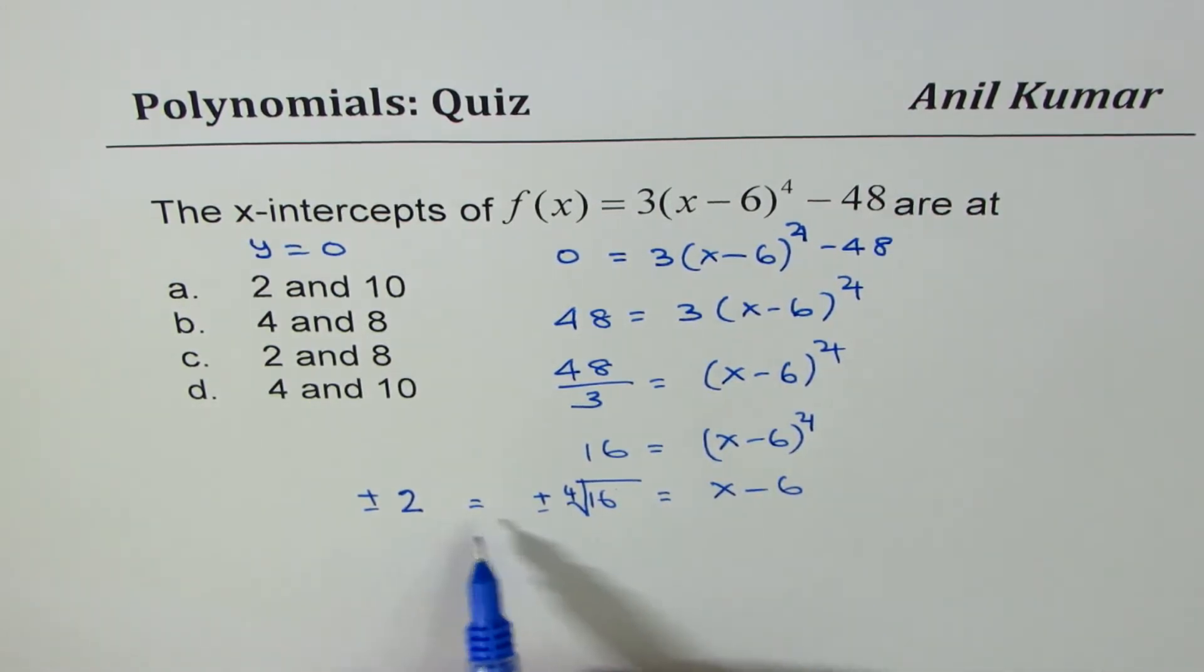Perfect. So don't write square root. Otherwise you would have got the wrong choice. Okay. 4th root of 16 is plus minus 2.